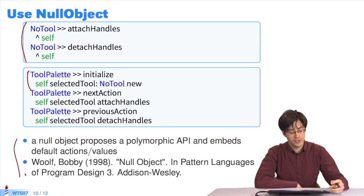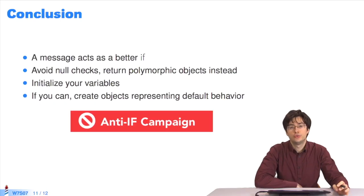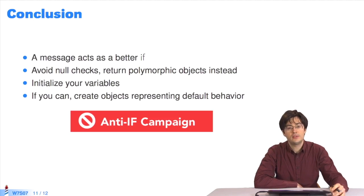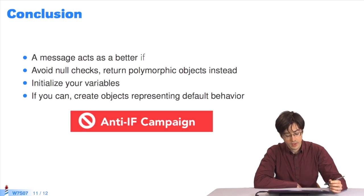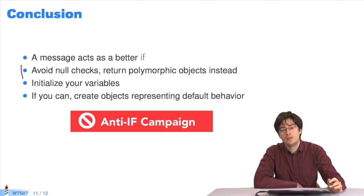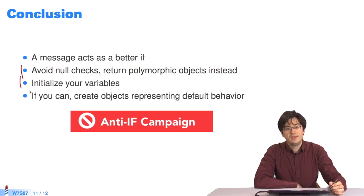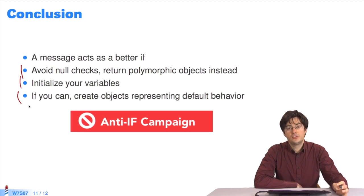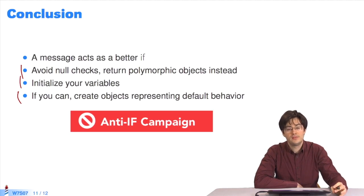To find out more about the null object pattern, see these references. In conclusion, messages are more effective than ifs. You will utilize ifs in certain cases, but you can often avoid using them and send messages instead. Avoid returning nil because it obliges you to insert if checks to find out whether or not the value is nil. Initialize variables either on creation or using lazy initialization. Create objects representing default behavior or an absence of behavior. This applies not only to Pharo, but to all object-oriented languages.